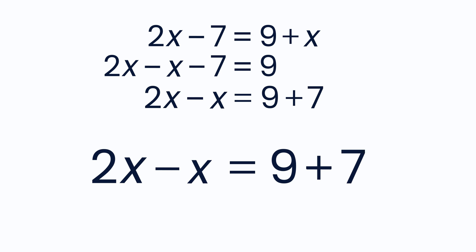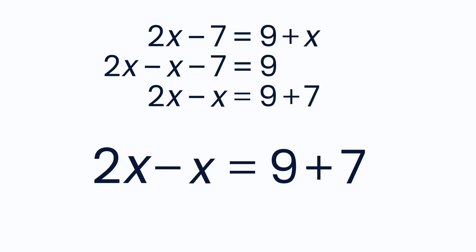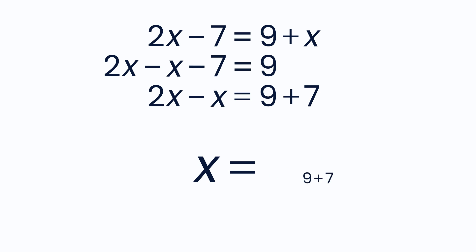Finally, you combine the terms on each side. 2x minus x is equal to x, and 9 plus 7 equals 16. This gives you that x equals 16.